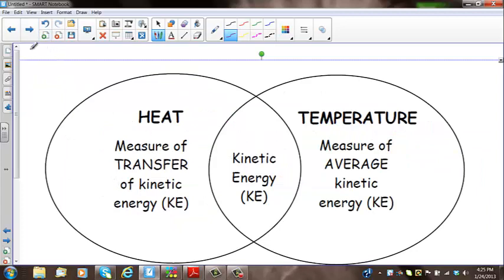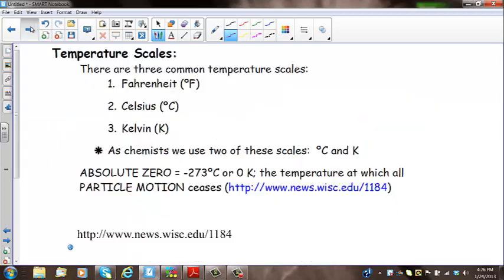Here's a Venn diagram that basically shows what's connected between heat and temperature, and that is kinetic energy. But that's the only thing that connects the two words. Temperature is a measure of the average kinetic energy, and heat measures the transfer of kinetic energy. They both have to do with kinetic energy.